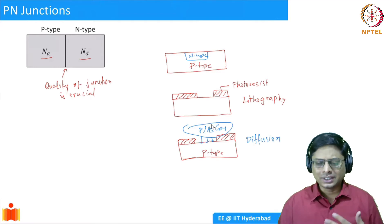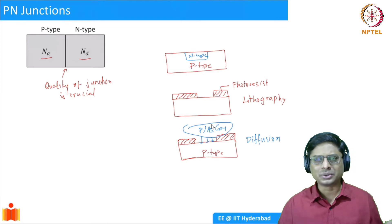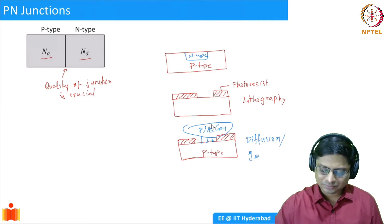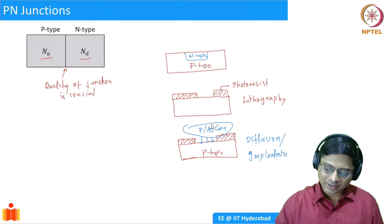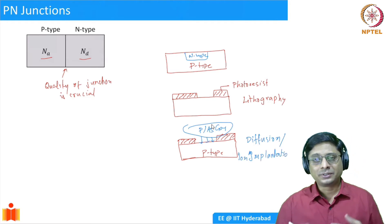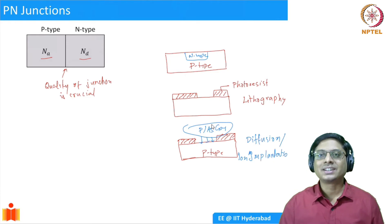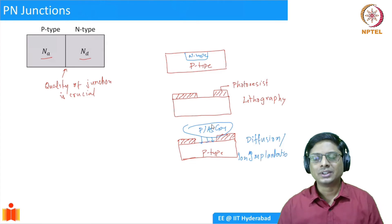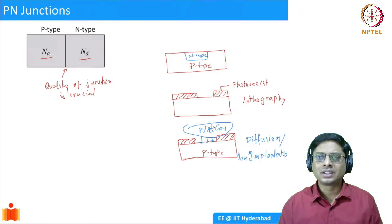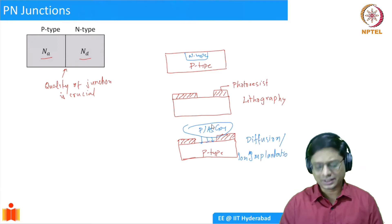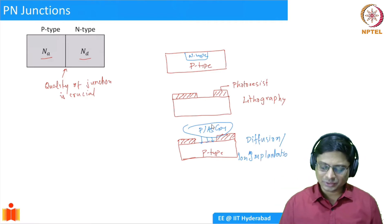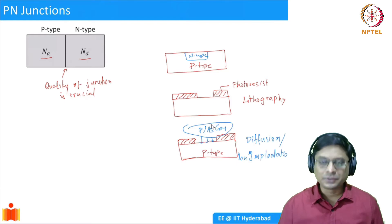Originally in the 60s and 70s we used diffusion, but nowadays more of it is done by what is known as ion implantation. In this process, diffusion is slow, so instead we accelerate these ions — phosphorus or arsenic ions — through a particle accelerator. They acquire higher kinetic energy and then you bombard them into the lattice, making the doping process faster. There are some advantages and disadvantages, but that is the topic of a processing or VLSI technology course. For us, it is enough to know that we get diffusion of these ions — arsenic or phosphorus atoms penetrating into the p-type substrate.